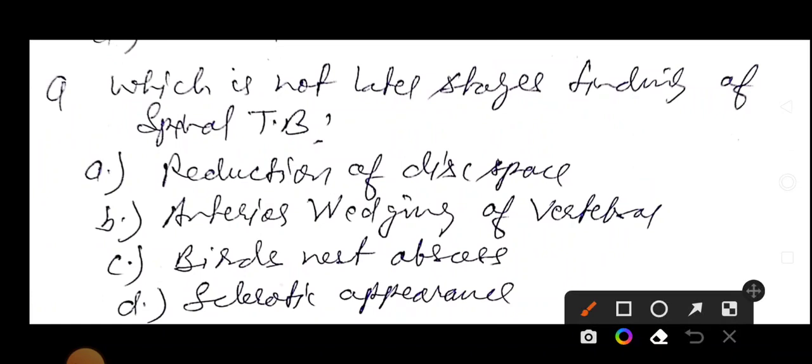Which is not later stage finding of spinal TB? Reduction of disc space, anterior wedging of vertebra, bird's nest abscess, sclerotic appearance. So guys, they are asking which is not a late stage finding of spinal TB.